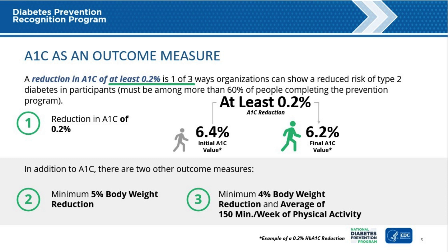The eligibility determination is distinct and separate from using A1c as an optional outcome measure for recognition status determination. To achieve and maintain recognition status, CDC-recognized organizations must meet several requirements, including showing that there has been a reduction in the risk of developing type 2 diabetes among people completing the National DPP. Organizations must show that 60% of all persons completing the LCP achieved one of three outcomes: at least a 2% reduction in A1c, a minimum of 5% weight loss 12 months after the participant cohort began, or at least 4% weight loss combined with at least 150 minutes a week on average of physical activity. All three of these measures show reduced risk of type 2 diabetes among participants.